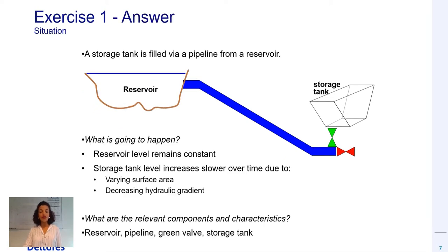The answers to those questions for this simple pipeline system are quite trivial. Due to gravitational acceleration, the water will flow from the reservoir, which has a constant water level, to the tank in which the water level will rise, resulting in a decrease in the hydraulic gradient in the system.